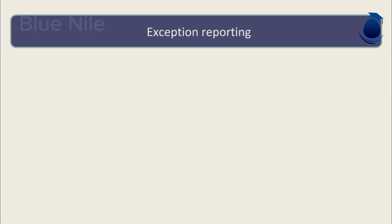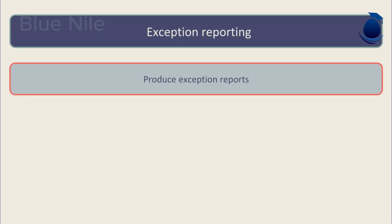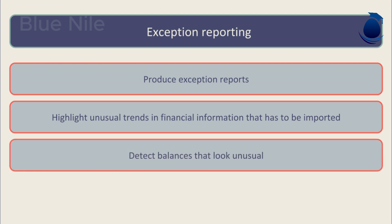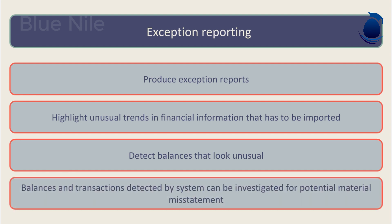The software can also be programmed to produce exception reports. It can highlight unusual trends in the financial information that has been imported, and detect balances that look unusual. An example would be producing a list of balances on the receivables ledger that have credit balances, suggesting overpayments or possible missing invoices. These balances and transactions can then be investigated by the auditor with the client for potential material misstatements.